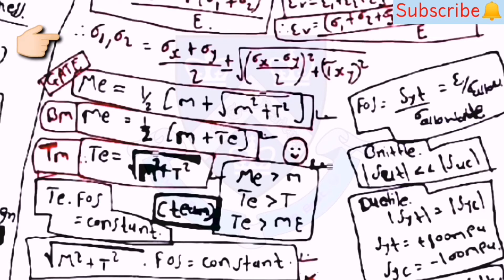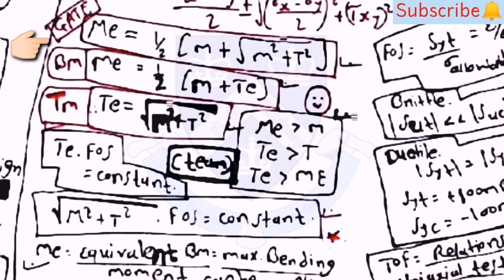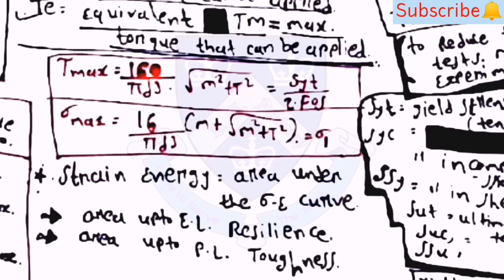sigma_1 or sigma_2 = (sigma_x + sigma_y)/2 ± √[(sigma_x − sigma_y)²/4 + tau_xy²]. Three important equations: M_e = (1/2)·(M + √(M² + T²)), also M_e = (1/2)·(M + T_e) where T_e = √(M² + T²). Remember: M_e > M, T_e > T, and T_e > M_e. Also, T_e·FOS = constant, and √(M² + T²)·FOS = constant. π·d³·(M² + T²) = (SYT/2)·FOS. sigma_max = (16/(π·d³))·(M + √(M² + T²)) = sigma_1.